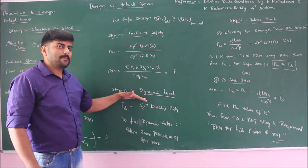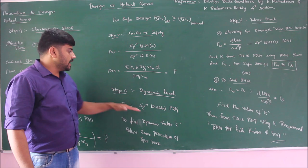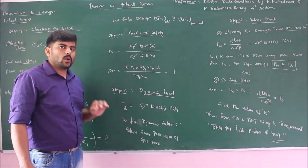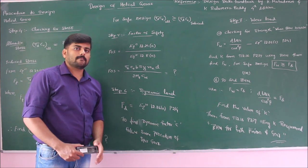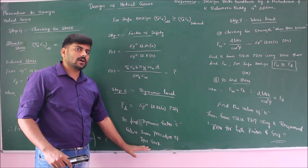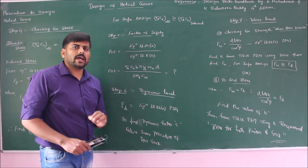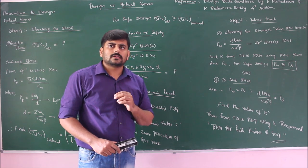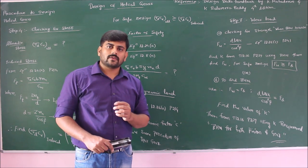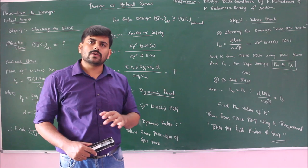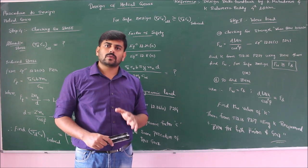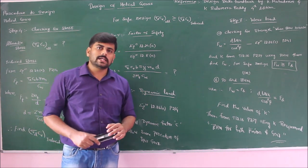Moving on to step 6 — to find the dynamic load. Use equation 12.26A, available in page number 214, to find the dynamic load. The only unknown in that equation is the dynamic factor C. To find this dynamic factor C, use the same procedure as in spur gear design: first, find the value of error using table 12.13 if the class of gear is known, or table 12.14 if the class of gear is not given. Once you find the error, use table 12.12 to find the dynamic factor by interpolation.